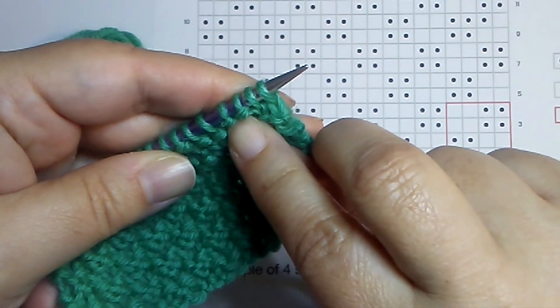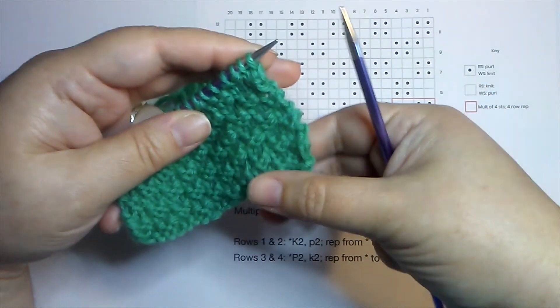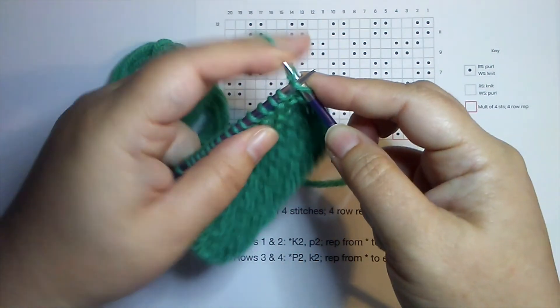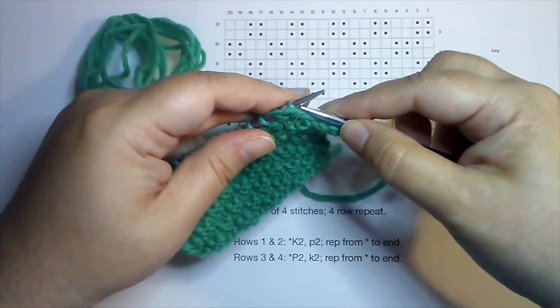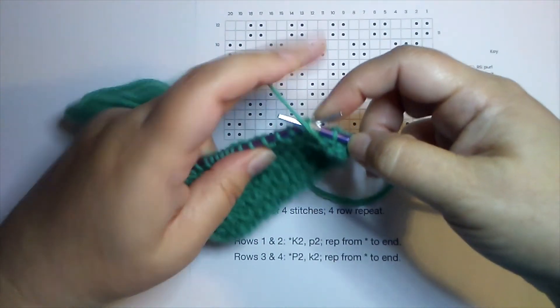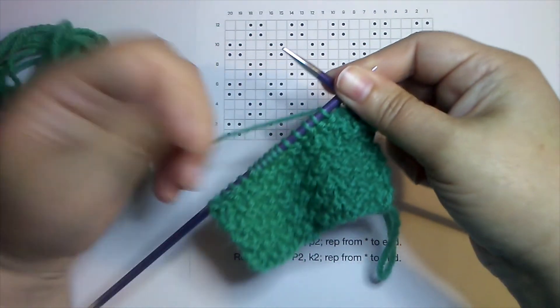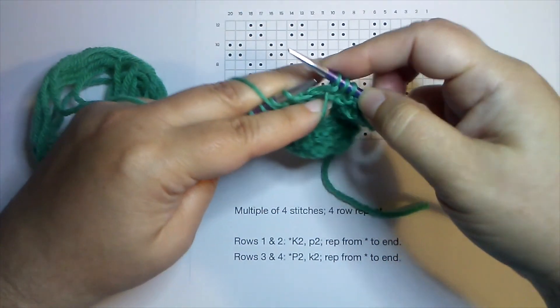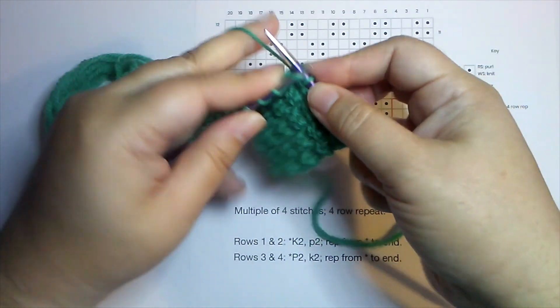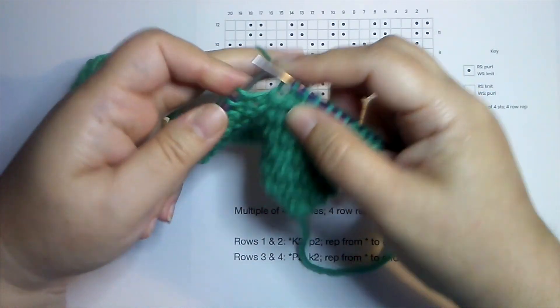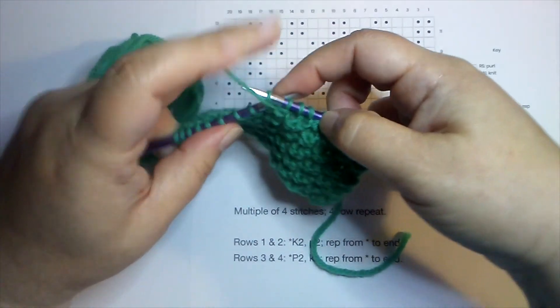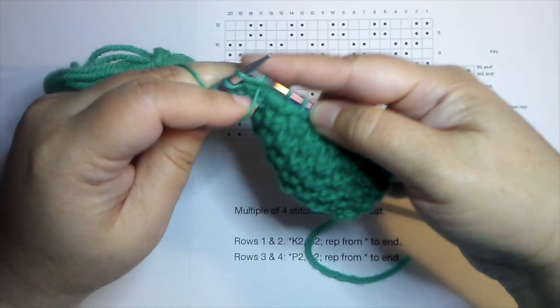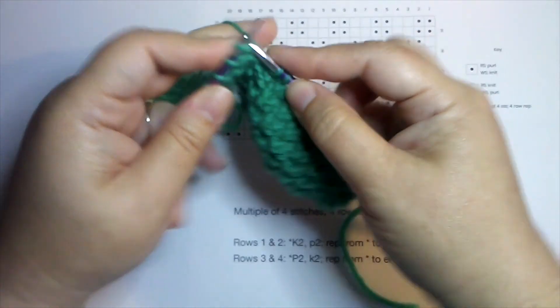Then when I come around to the back after I finish this row, you continue that pattern. Okay, I can see there's my knits and there's my purls. The purl, the heads of the stitches sit right beneath the needle. So I will knit two, purl two across this row.